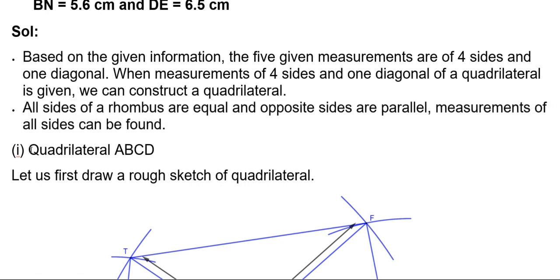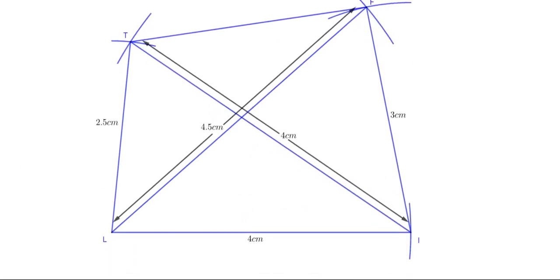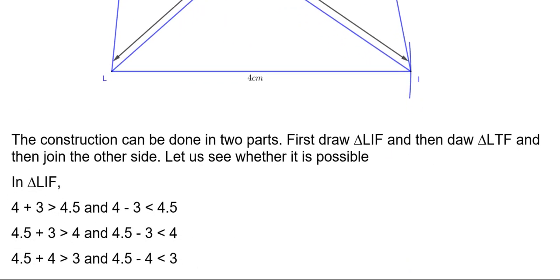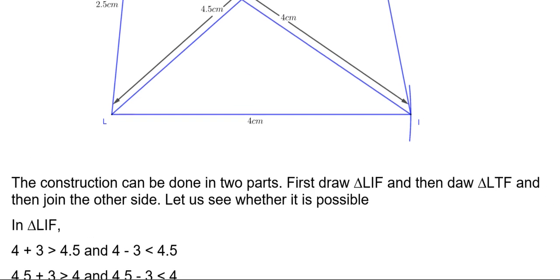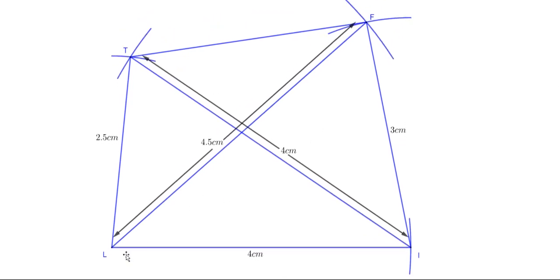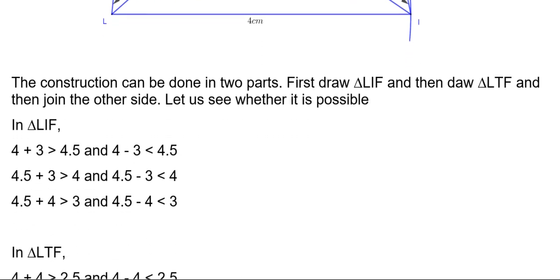In the given problem, quadrilateral ABCD. Let's first draw a rough sketch of the quadrilateral. Here the rough sketch is given. The construction can be done in two parts: first draw triangle LIF, and then draw triangle LTF. With these two combined triangles we can form a quadrilateral, and then join the other sides.